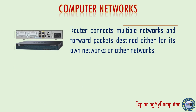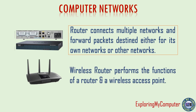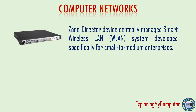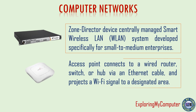Router connects multiple networks and forwards packets destined either for its own networks or other networks. Wireless router performs the functions of a router and a wireless access point. Zone director device is a centrally managed smart wireless LAN system developed specifically for small to medium enterprises. Access point connects to a wired router, switch, or hub via an ethernet cable and projects a Wi-Fi signal to a designated area.